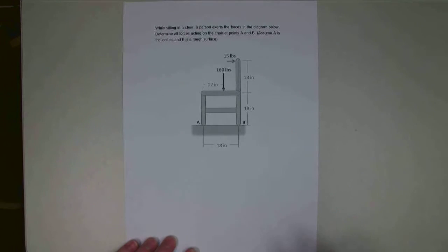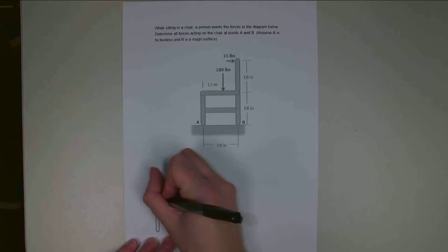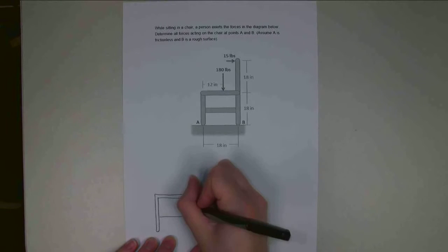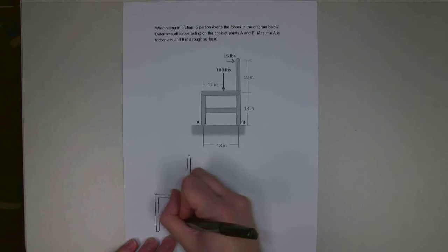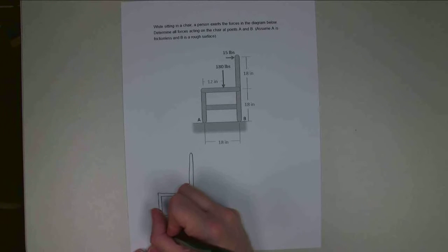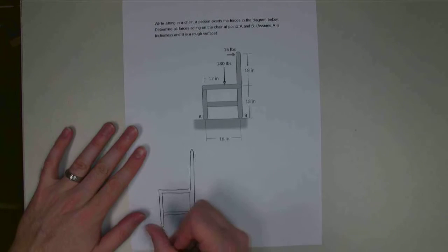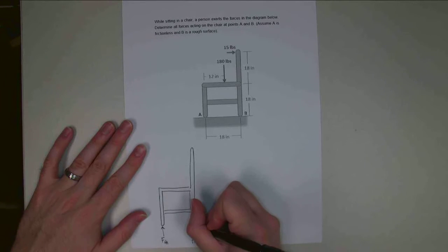So if I draw out my free-body diagram, let's draw the chair again. I have a shape like this, crossbeam, the back. Alright, so at A, I'm going to have no friction, just a normal force. I'm going to call this one F_A. I'm going to have a normal force back here at B, F_NB. And I have a friction force, or a potential friction force, F_FB, at the back here.